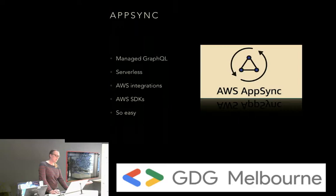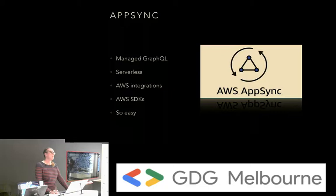So let's move on to AppSync. AppSync is the AWS implementation of GraphQL — it's managed GraphQL, it's serverless, it integrates with a lot of AWS services, and it provides SDKs for the client side. It's just really easy to get started — it's a great way to start using GraphQL.